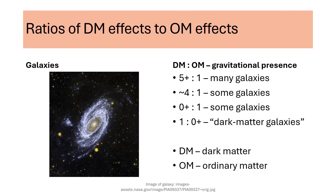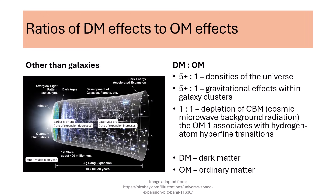Here are four ratios of dark matter presence to ordinary matter presence. We seek to explain the ratios and to provide insight about galaxy formation. Here are three ratios of dark matter effects to ordinary matter effects. We seek to explain those ratios. The one-to-one ratio might suggest that some dark matter stuff includes hydrogen-like atoms.